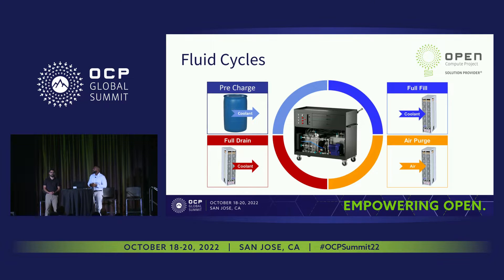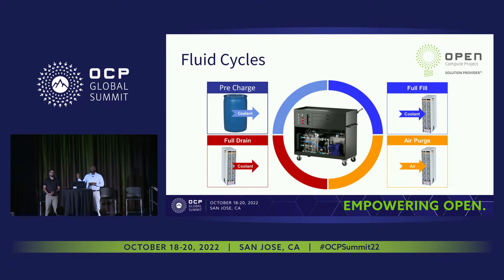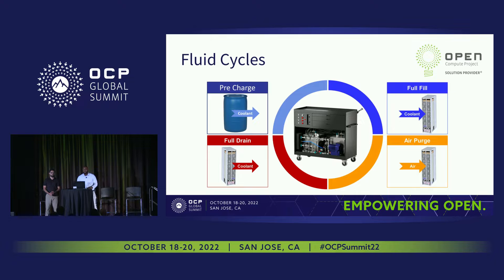There are four fluid cycles: pre-charge, fill, drain, and purge. For pre-charge, you connect the cart to a tank or tub of fluid and fill the new coolant reservoir before performing a service operation — this would be done at a stationary fill station. Then for full fill, you take that coolant pre-charged into the cart and install it into an AALC rack. The drain function is for servicing and would only be used if you needed to entirely drain a rack, though racks do not need to be fully drained to be transported. Finally, air purge ensures that all the fluid from a drained rack is removed.